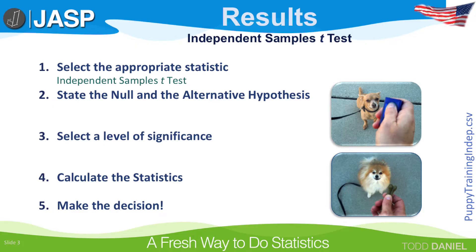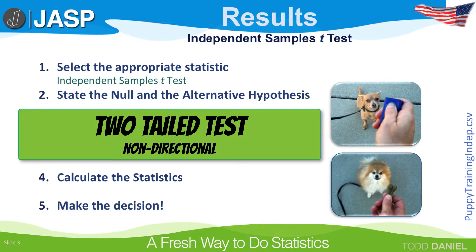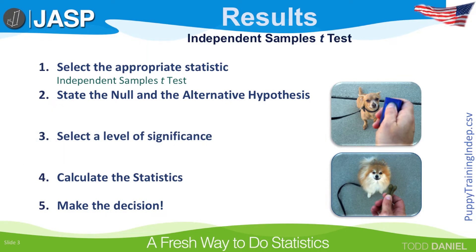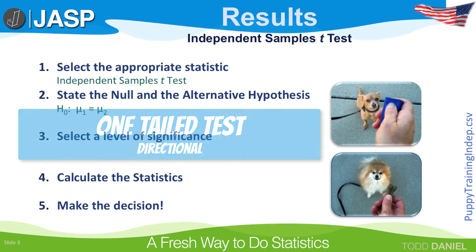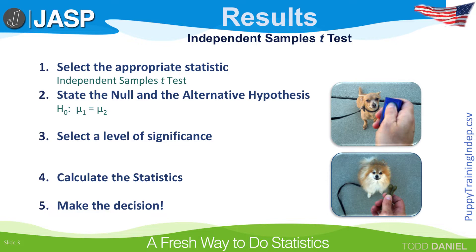Step two, state the null and alternative hypothesis. We want to know if the means of the two samples of puppies are different. We are not saying which group will be better, so this is a non-directional or two-tailed test. If we said that one group was better, it would be a one-tailed or directional test. Because this is a two-tailed test, our null hypothesis will be H₀: μ₁ = μ₂. That means that our alternative hypothesis will be H₁: μ₁ ≠ μ₂.